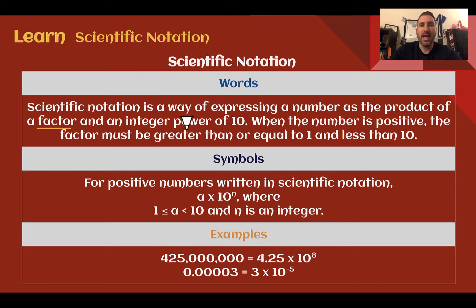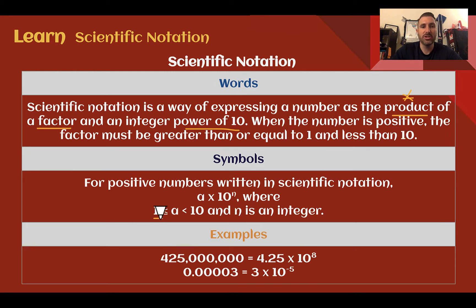For scientific notation, it's a way of expressing a number as the product of a factor and an integer power of 10. So we're going to have some number and a power of 10, product meaning multiplication. When the number is positive, the factor is going to be greater than or equal to 1 but less than 10, which we can see where A is our factor — it's between 1 and 10. 1 is okay to use; 10 is not. Scientific notation is written as the factor times some power of 10.